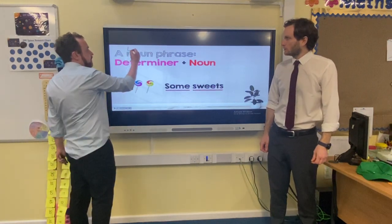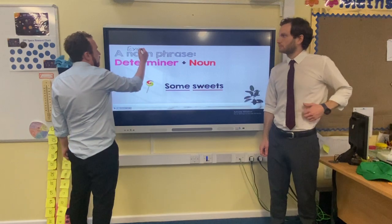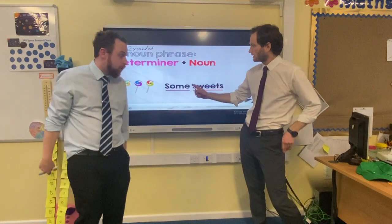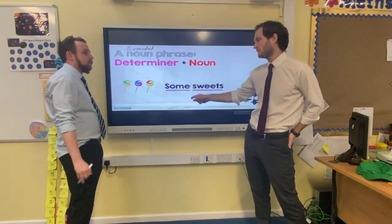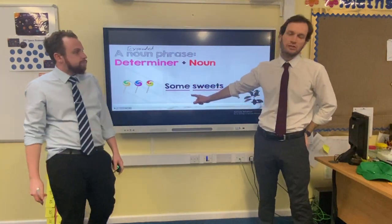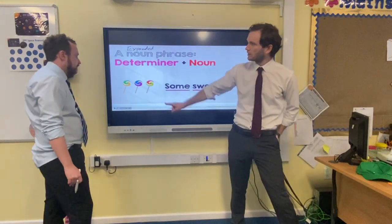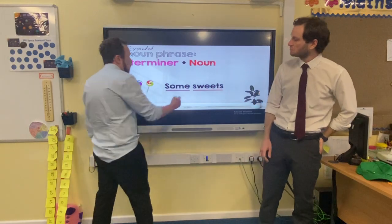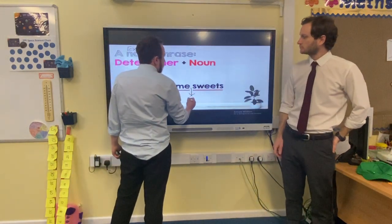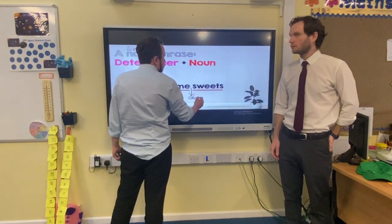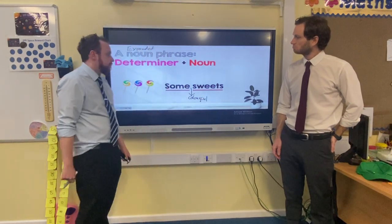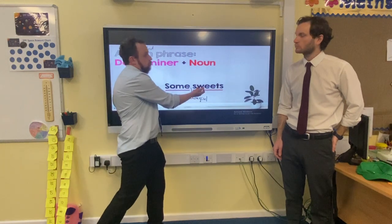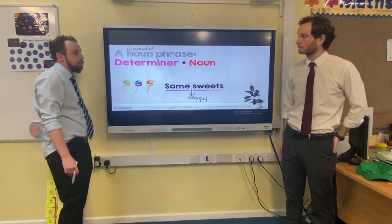So 'some sweets' is a noun phrase, but we want to turn it into an expanded noun phrase. I need a describing adjective — we could say 'some yummy sweets', 'some delicious sweets'... actually, I think 'colorful'. Yeah, let's go with 'colorful' — some colorful sweets. We've got the determiner 'some', then the adjective 'colorful', then the noun 'sweets'. Simple as that.